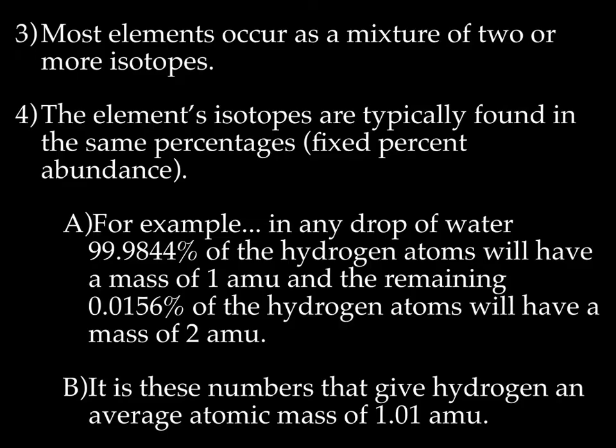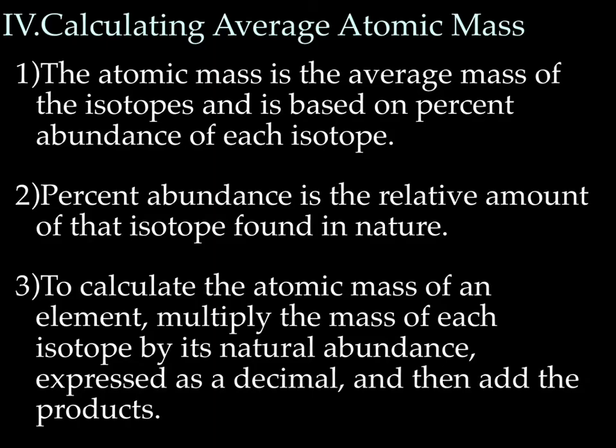The remaining 0.156% of the hydrogen atoms will have a mass of 2 amu. Those hydrogens have one proton, one neutron, thus giving you a mass of 2 amu, and then of course, one electron. It's these numbers that give hydrogen an average atomic mass of 1.01 amu. So on the periodic table, the mass of hydrogen is 1.01 amu, but again, that's an average. There is no single atom that has a mass of 1.01. It can't have part of a neutron or proton.